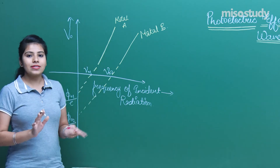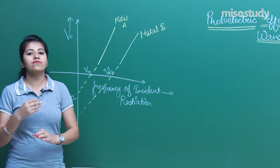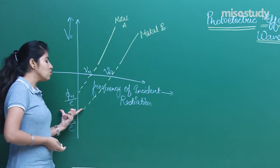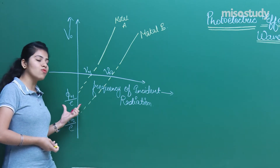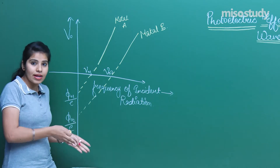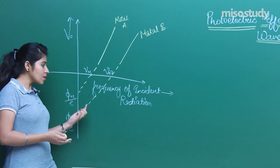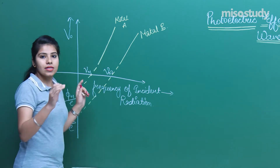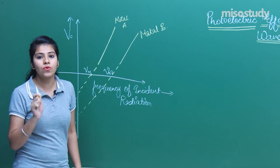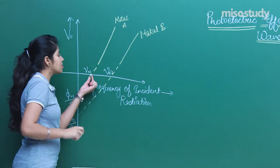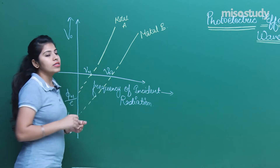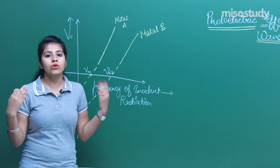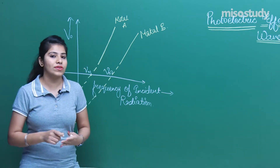After drawing this graph, we discussed some conclusions. We said that phi naught and why it appears will be discussed in detail in this lecture. You can see that nu naught 1 and nu naught 2 mark the threshold frequencies — if the frequency of incident radiation is less than the threshold frequency, there will be no emission of electrons, which means no photoelectric effect is occurring.